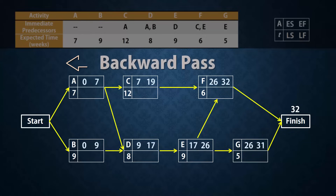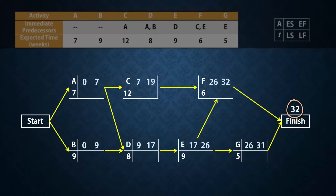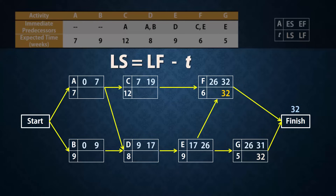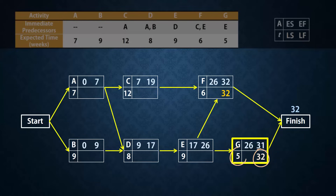Now let's do the backward pass. Since the project's completion time is 32 weeks, the latest finish times for the activities at the finish node, F and G, has to be 32. That is, F and G cannot be completed in longer than 32 weeks. Next, we obtain the latest start times by subtracting the activity times from the latest finish times. For G, the latest start time will be 32 minus 5, to give 27. For F, the latest start time will be 32 minus 6, and that gives 26.